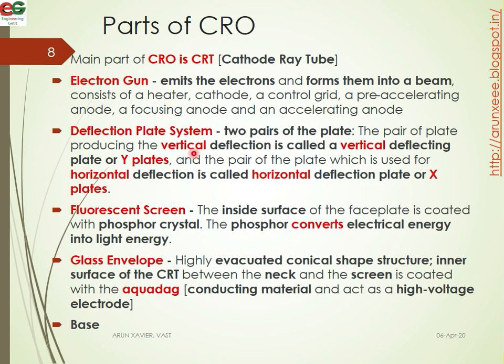Next is the deflection plate system. The vertical deflection plate is the Y plate, used for vertical movement. The horizontal deflection plate is the X plate, used for left-to-right movement. The fluorescent screen has its inside surface coated with a phosphorous crystal. This phosphorous coating converts electron energy into light energy.